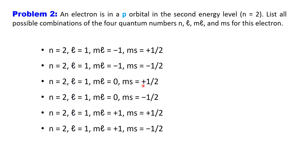Putting it all together, the possible quantum number combinations for an electron in a 2p orbital are: (n=2, l=1, ml=−1, ms=+½), (n=2, l=1, ml=−1, ms=−½), (n=2, l=1, ml=0, ms=+½), (n=2, l=1, ml=0, ms=−½), (n=2, l=1, ml=+1, ms=+½), and (n=2, l=1, ml=+1, ms=−½).